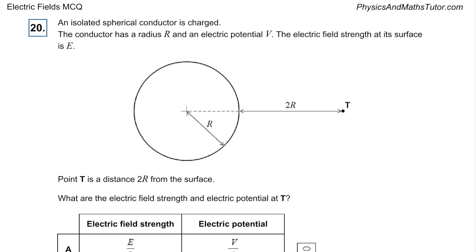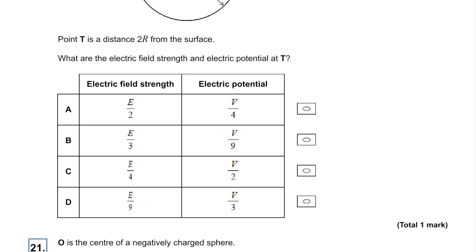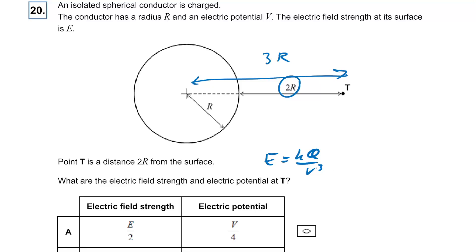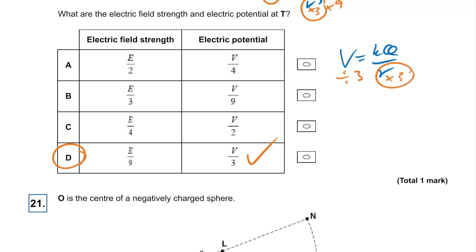Question twenty: an isolated spherical conductor. The point T is a distance 2r from the surface, so the total distance from the centre is 3r. Field strength equals KQ over r² — r has gone from r to 3r, tripling, so it goes up by nine and field strength goes down by a factor of nine. Potential equals KQ over r — if that triples, potential goes down by a factor of three. The answer is D.